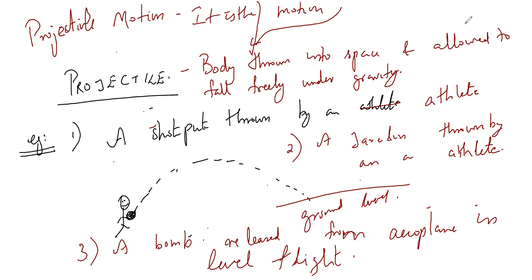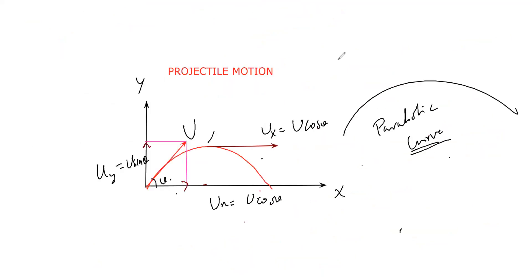Let me go back to the first page where UX is equal to U cos theta and UY is equal to U sin theta. Let this point be O. From O, a body — like a shot put — is being thrown with an initial velocity and finally free-falls to the ground. This is a two-dimensional motion on the X and Y axes. This initial velocity is divided into two components.